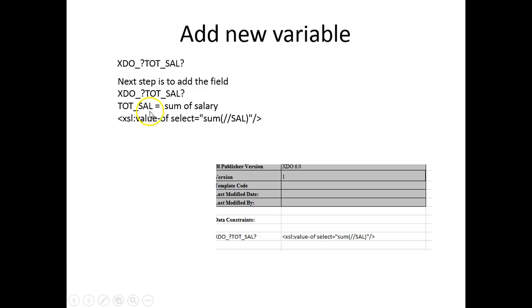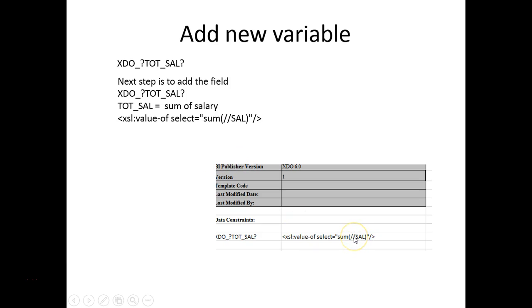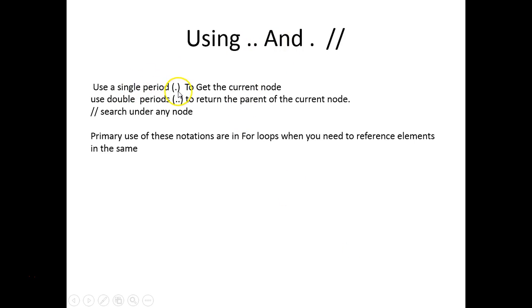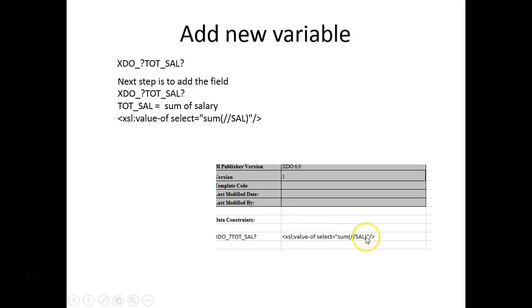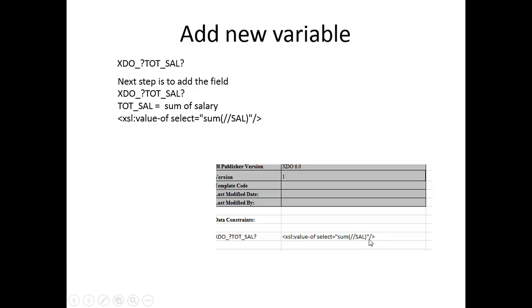We are going to create a new XDO entry. We type in XDO total salary and simply do a sum. If you haven't seen the video about access paths: a single period means current node, a double period means the parent of the current node, and slash slash means search under any node. So basically we are saying get all salaries from any node — get all elements which have a salary — and sum them up. That's what we are going to do.